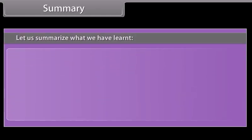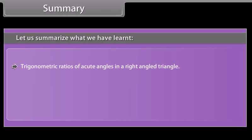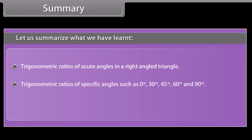Let us summarize what we have learned: trigonometric ratios of acute angles in a right-angled triangle, trigonometric ratios of specific angles such as 0°, 30°, 45°, 60°, and 90°, and trigonometric ratios of complementary angles. Thank you.